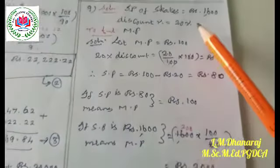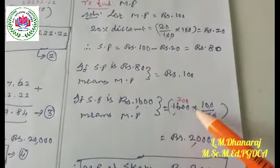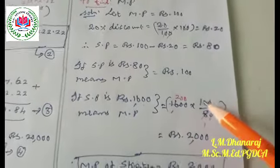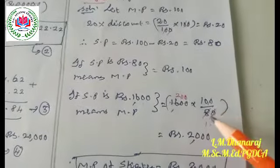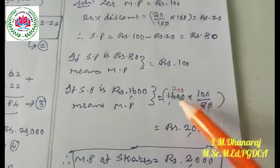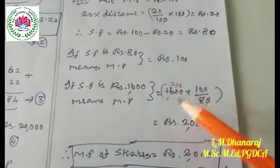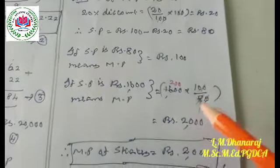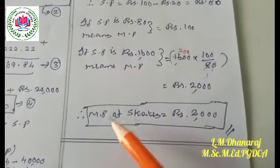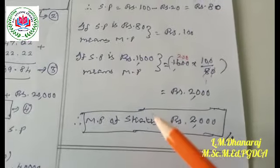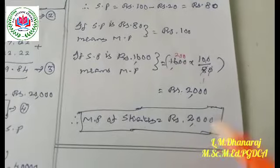If the selling price is rupees 80, the marked price is rupees 100. If the selling price is rupees 1,600, the marked price equals 1,600 into 100 divided by 80. Cancelling one zero from each, and dividing — 200 into 10 gives rupees 2,000. So the marked price of the skates is rupees 2,000.